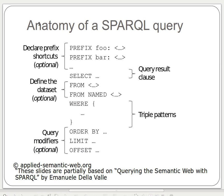The anatomy of a SPARQL query has five sections. First is where we declare our prefixes — shortcuts — which is optional. Note that SPARQL keywords are written in capital case. So the optional part at the top of the query is where we define our prefixes.